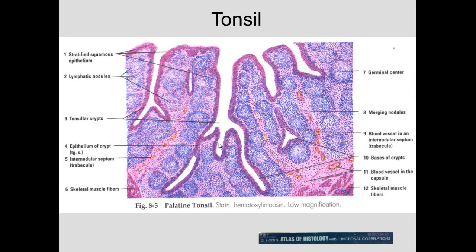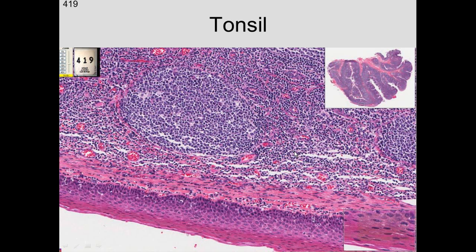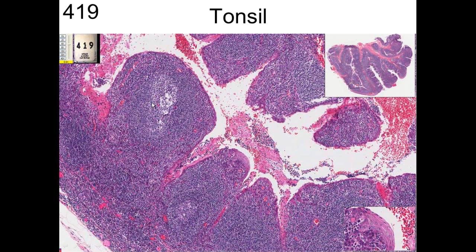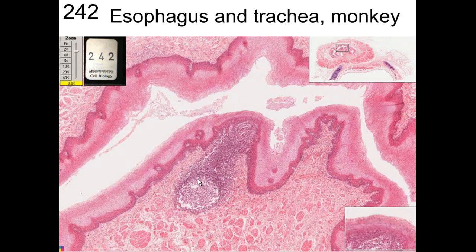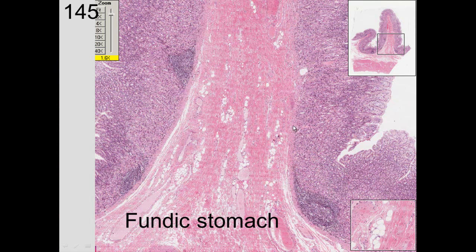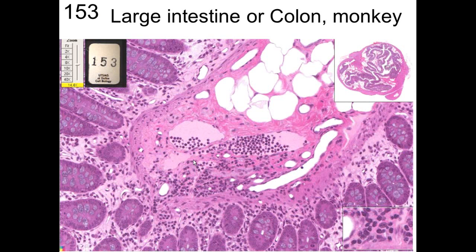Another organ in the oral cavity is the tonsil, which has stratified squamous epithelium with lymphoid nodules bearing germinal centers and surrounding lymphocytes. Further down the esophagus we again see stratified squamous epithelium with lymph nodules, and lymph nodules are found throughout the GI tract — in the stomach and elsewhere — with a high density of various white blood cells.